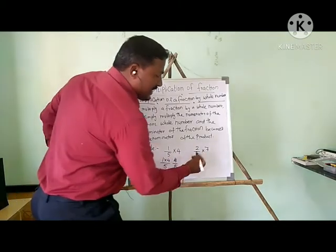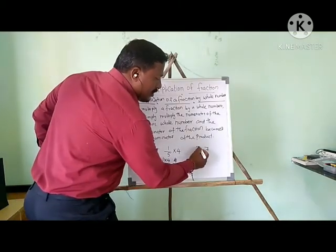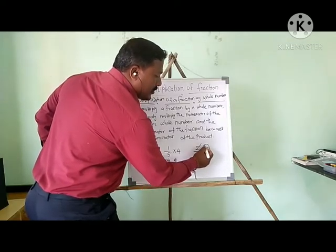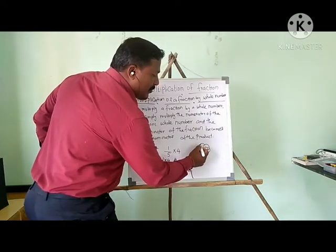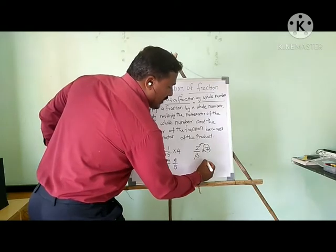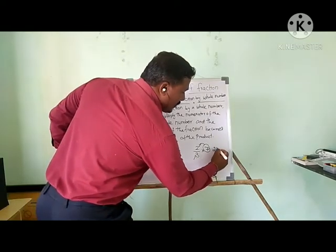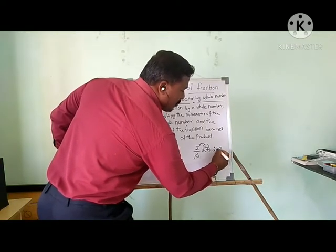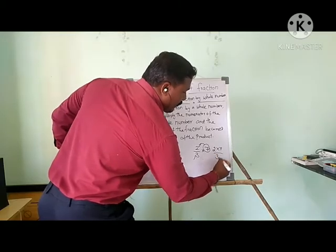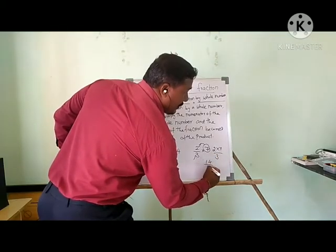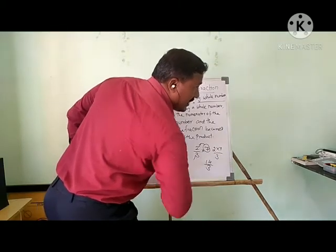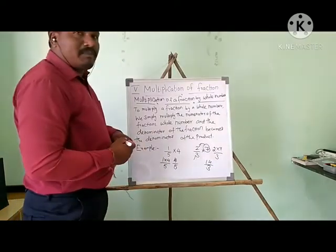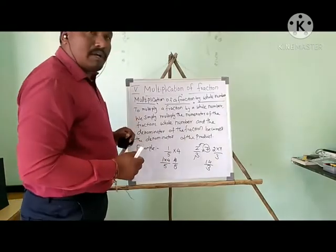If you take another example: this is the numerator, this is the denominator. You can multiply the whole number only with the numerator. So: 2 × 7 upon 3. 2 sevens are 14, so 14/3 is the answer. This is the way you multiply a fraction with a whole number.